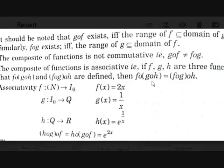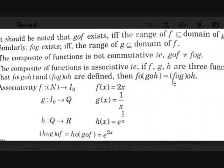Let's see the properties. The first property: g∘f exists if the range of f is a subset of the domain of g. Similarly, f∘g exists if the range of g is a subset of the domain of f. The second property: the composite function is not commutative, meaning f∘g is not equal to g∘f, as we discussed.